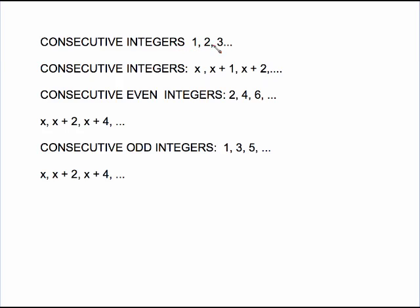Like look at these, 1, 2, 3 are consecutive integers, so are 5, 6, 7, etc. One number followed immediately by the next number.